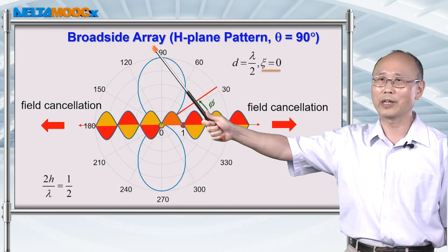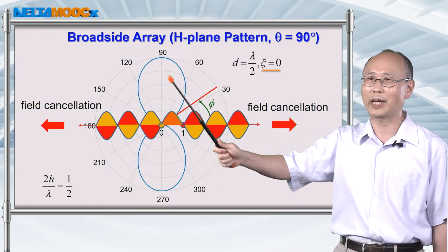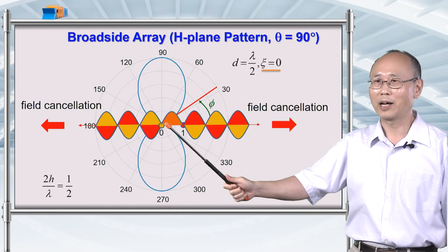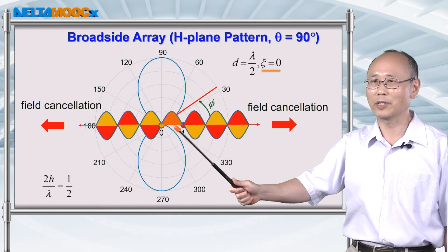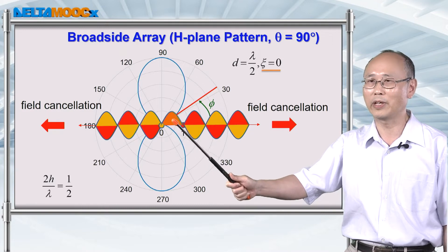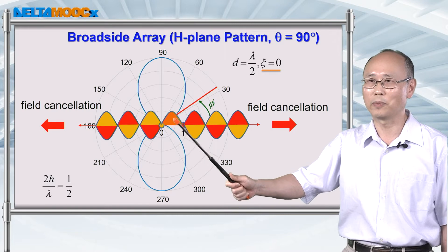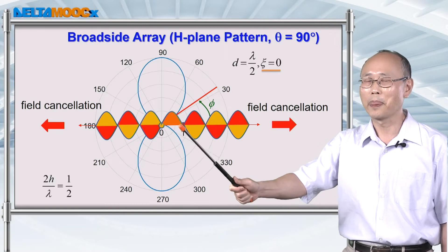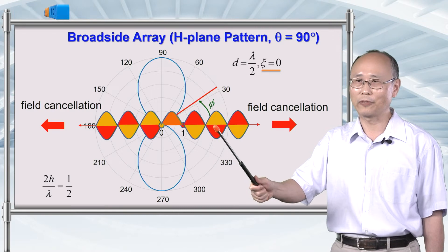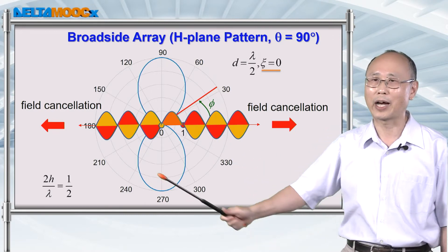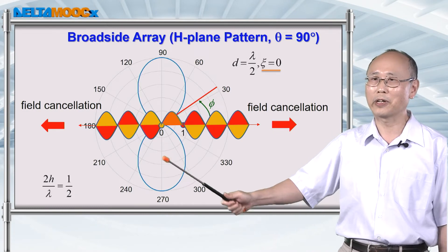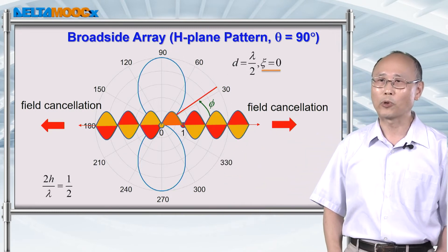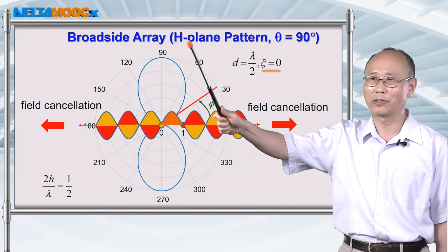The radiation is primarily around the phi equals 90 and 270 degree directions. We call such an array a broadside array, where you have strong radiation around the 90 degree and 270 degree directions. There is a standing wave between these two antennas, and radiation cannot escape along phi equals 0 or 180 degrees due to destructive interference. When radiation is primarily along the 90 and 270 degree directions, we call this a broadside array.